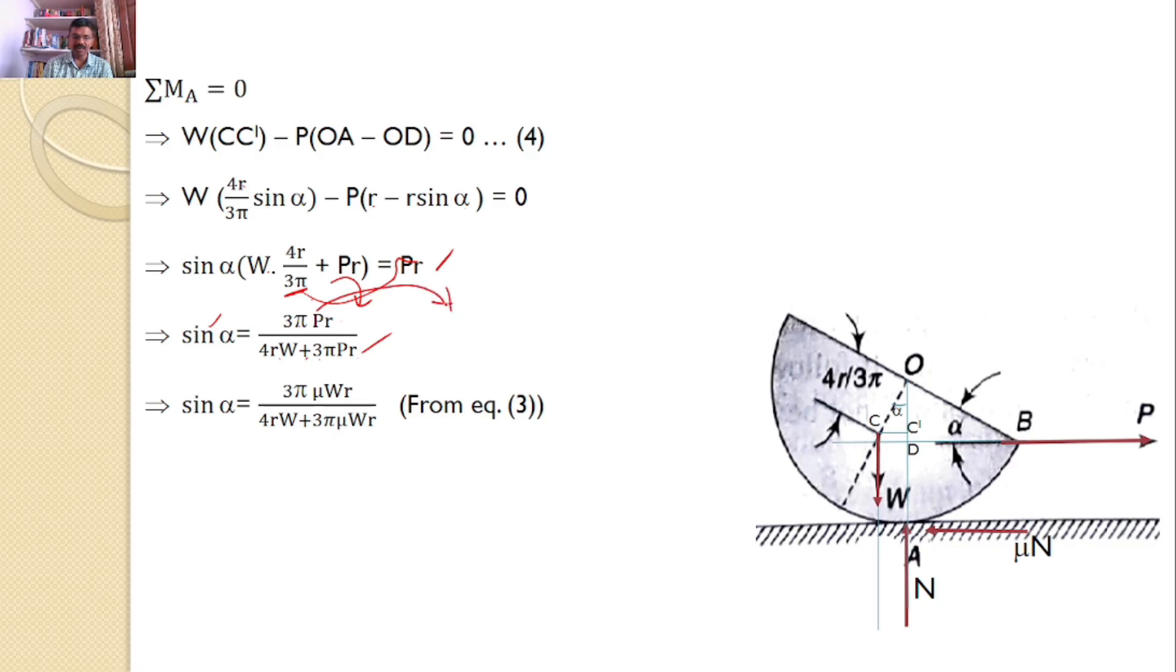P value is equal to μW. So I am substituting P = μW here. And here also, I am substituting P = μW. Simplify. And after simplification, you will get sin α = (3π μ)/(4 + 3π μ). So this is the answer for the given problem.